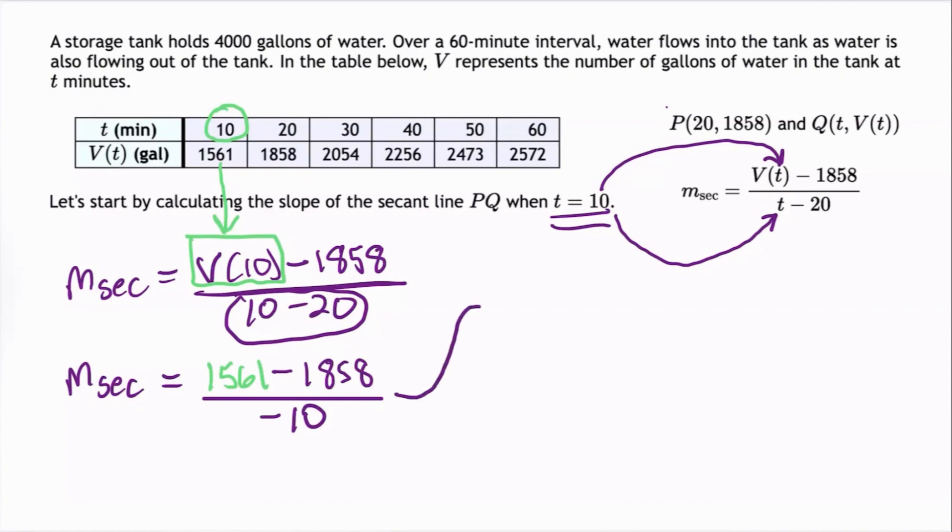Performing the subtraction in the numerator gives us M_sec equals 1561 minus 1858, which is negative 297, and that's divided by negative 10. Performing the division gives us M_sec is 2.97.